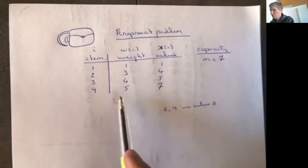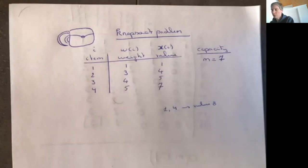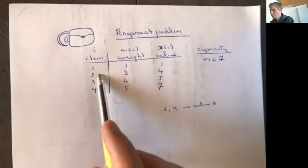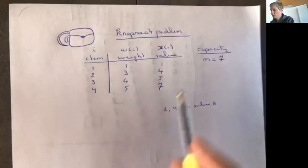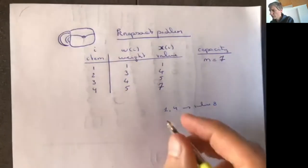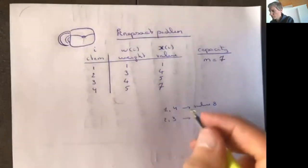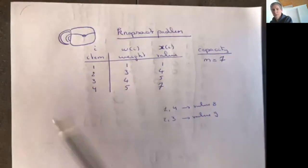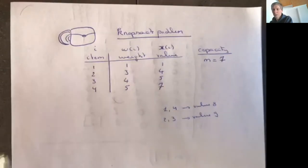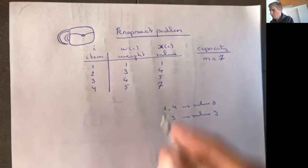That result comes from putting the item with the highest value in first, then seeing what's left. But I could also put items two and three together — their combined weight is seven, which fits, and this gives a value of four plus five, which is nine. So it's not always the case that you look at the highest-value or lowest-weight item first. There doesn't seem to be a clear-cut solution.